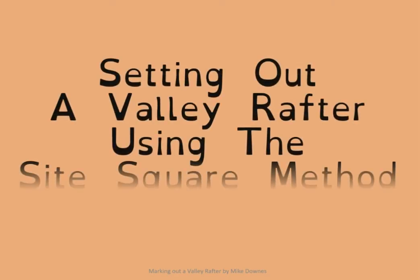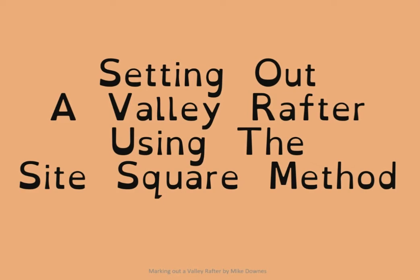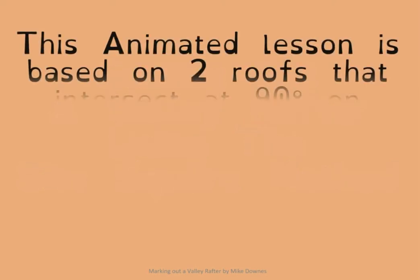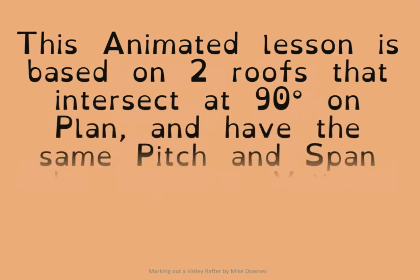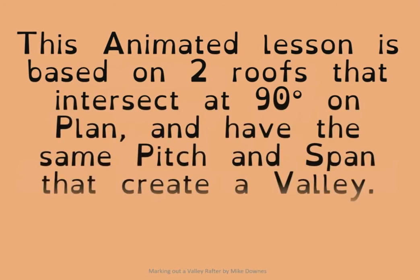Hi everyone, we're going to go through the steps involved in setting out a valley rafter for a roof. This particular example is a situation where two roof surfaces intersecting at 90 degrees on plan have the same pitch and span. They create a valley, and usually that valley line on plan is at 45 degrees, which indicates that both surfaces are of the same pitch.